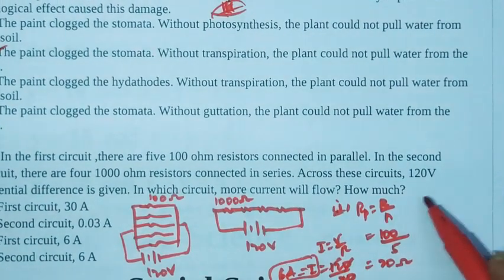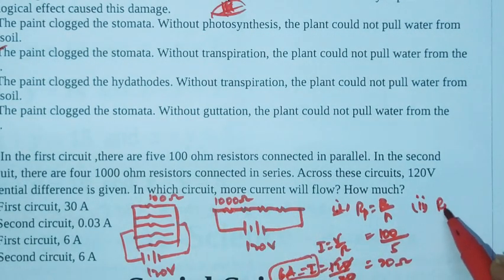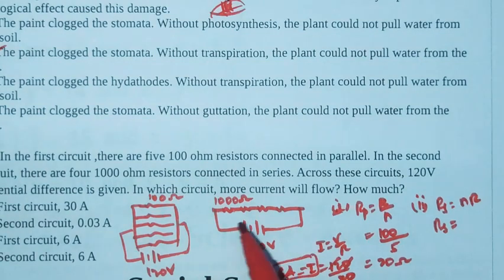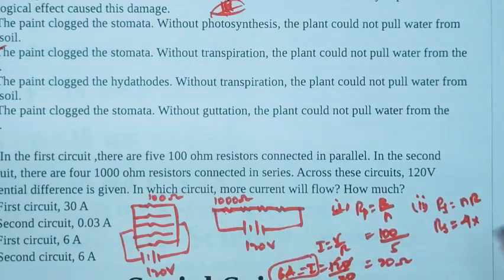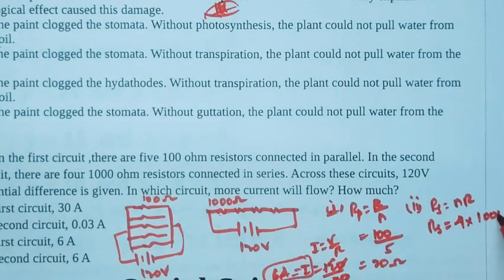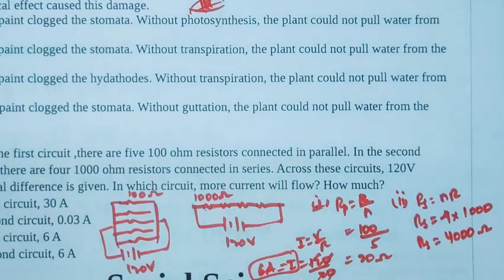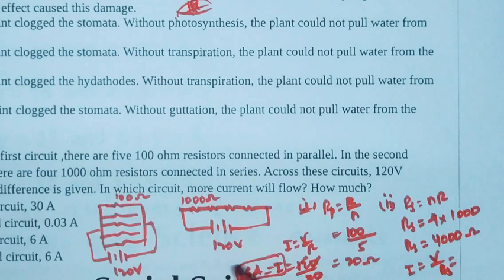Now we will get the second circuit. Second circuit has 4000 ohm resistor connected in series. For series, the general formula for effective resistance is NR. R equals N, number of resistors is 4 - 1, 2, 3, 4 - then R means resistance of 1 resistor, 1000 ohm. So 4 into 1000 equals 4000 ohm. Now current in second circuit, I equals V by Rs. V is 120, R is 4000. So dividing gives 0.03 ampere.